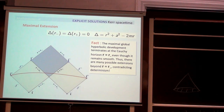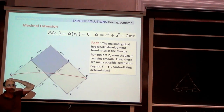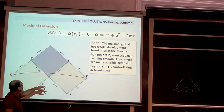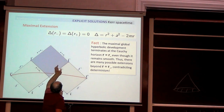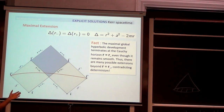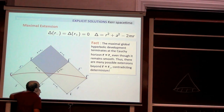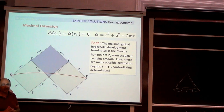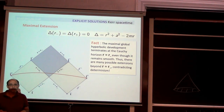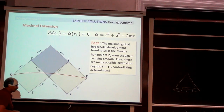These Cauchy horizons are problematic because the spacetime terminates there with no singularity — the curvature remains perfectly bounded — yet you can extend the spacetime in a way which doesn't depend on the initial data. We regard these Cauchy horizons as unstable: in generic situations you don't see them. We'll come back to this later.